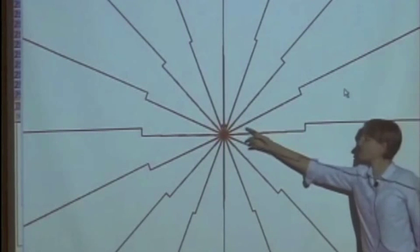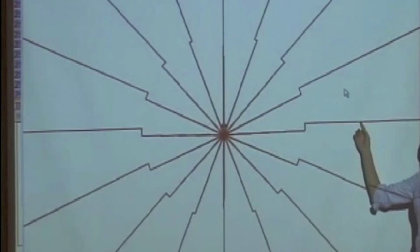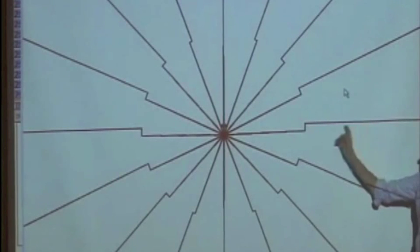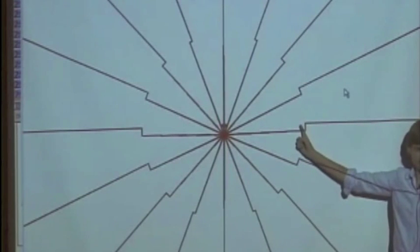And notice something sort of interesting about the geometry here. We find a big effect in a location that's perpendicular to the acceleration. So we get this big radiative electric field.